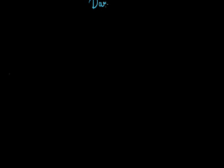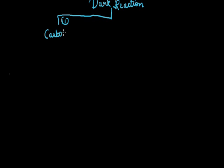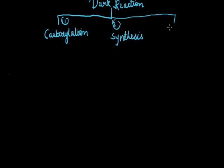The next step for photosynthesis is the dark reaction. It is again divided into three steps: the first is called carboxylation, the second is known as synthesis, and the third step is called regeneration.